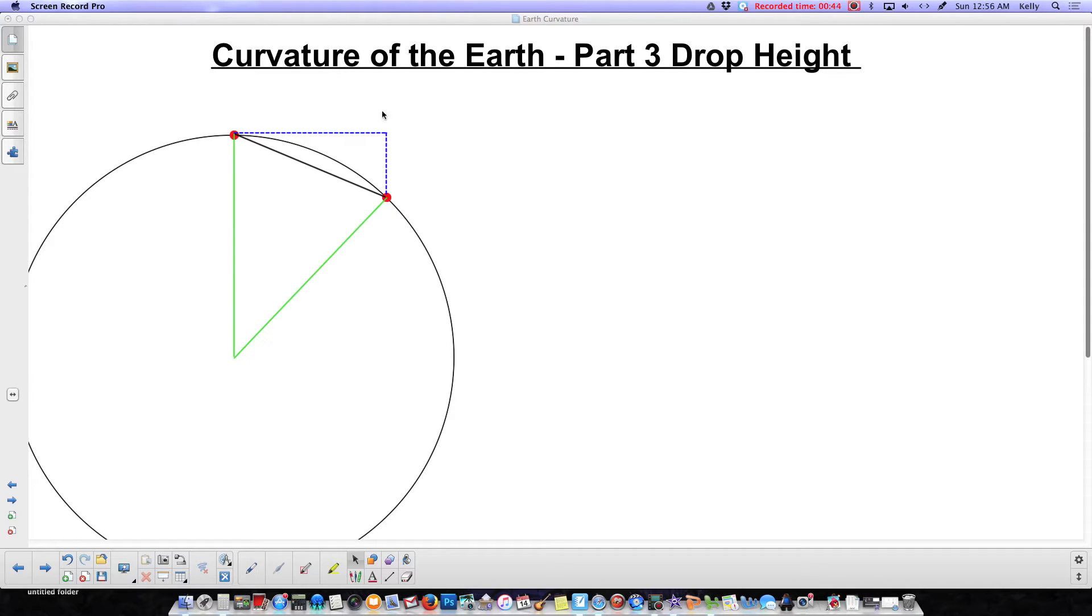This is how we would calculate that drop height. The easiest thing to do if you wanted a perfectly straight line is if you had a nice powerful laser that you could put out as a straight line. It would travel in the straight line, and you could see how far above the surface of the Earth it actually was.